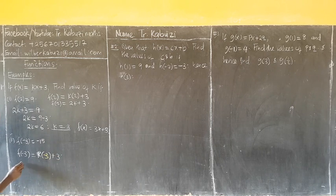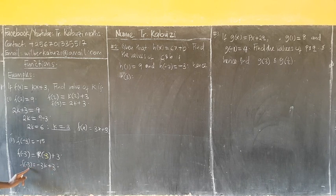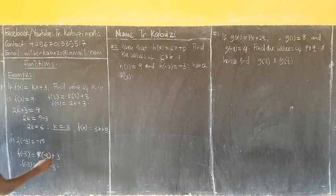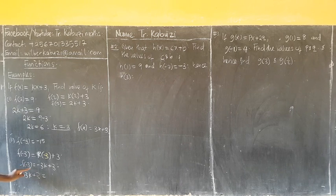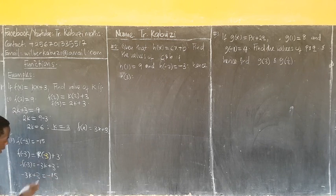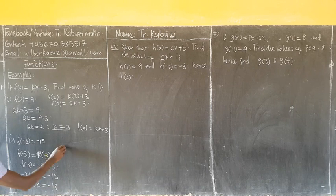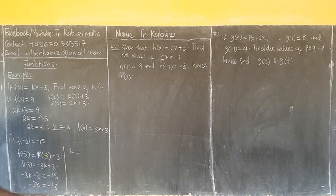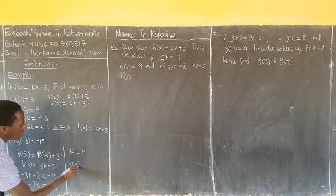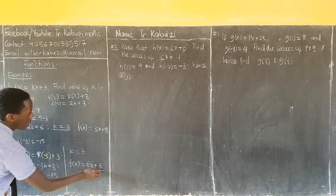So my f of negative 3 is equal to negative... So from here, now I just say negative 3k plus 3, which is equal to f of negative 3 is equal to negative 15. So my f of negative 3 minus 3 becomes negative 18. From there, our k becomes, divide it back into negative 3. This negative 2k becomes 6. Now my f of x is, from here, it was k by 6x plus 3, and that is the function.